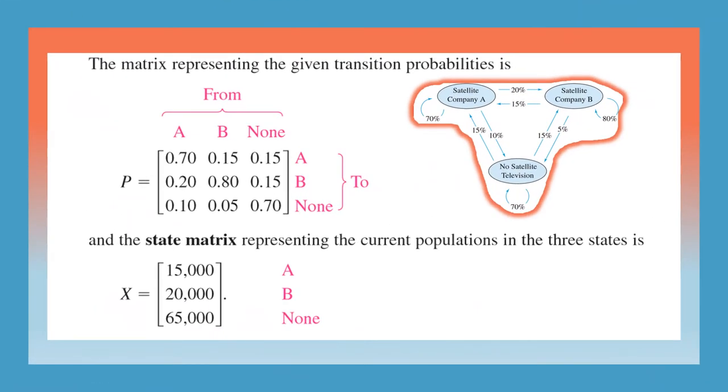Using that diagram, it is easy for us to prepare the transition matrix, and also the state matrix is given. So from A to B, and no cable TV, we prepare a transition probability matrix.